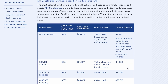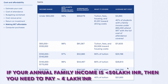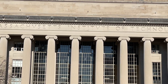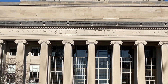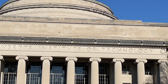MIT provides scholarships based on family income. If your annual family income is less than 50 lakh INR, you need to pay approximately 4 lakh INR per year as your MIT fee. For students for whom this is still not affordable, MIT provides 100% scholarships to exceptionally talented students.